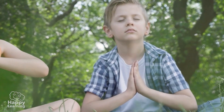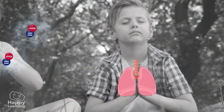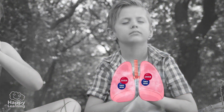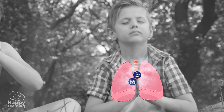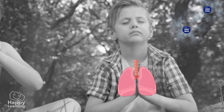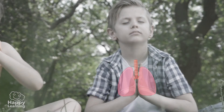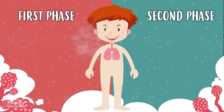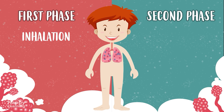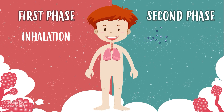Breathing consists of inhaling air in nature to take advantage of the oxygen it contains, and thereby expelling the carbon dioxide, which is the part of the air we don't use. The first phase, which is when the air enters the lungs, is called inhalation. The second phase, which is when we expel the air we don't use, is called exhalation. They are the exact opposite.